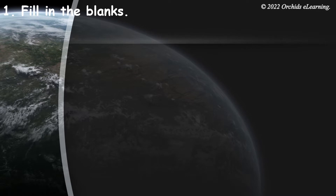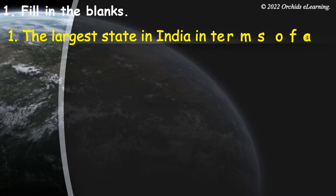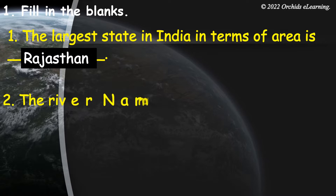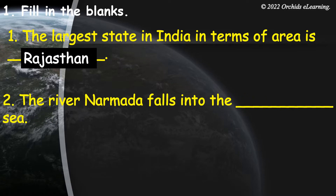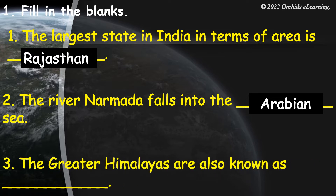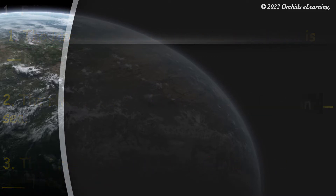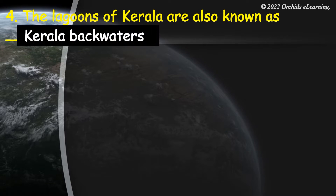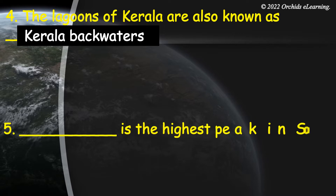Fill in the blanks. The largest state in India in terms of area is Rajasthan. The river Narmada falls into the Arabian Sea. The greater Himalayas are also known as Himadri. The lagoons of Kerala are also known as Kerala backwaters.